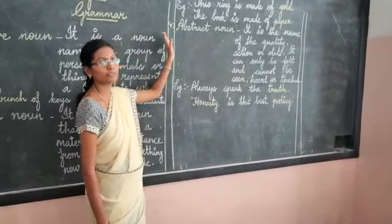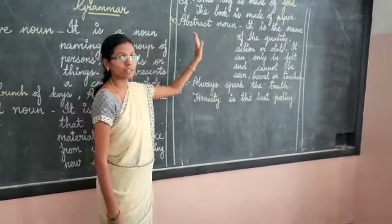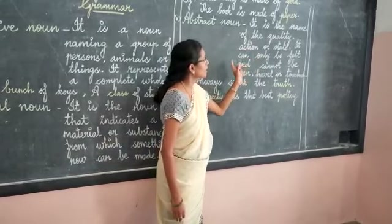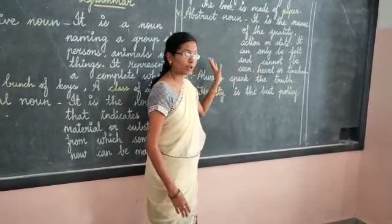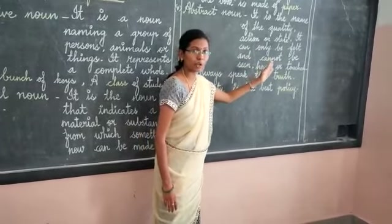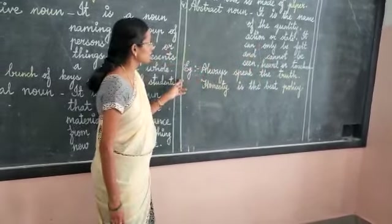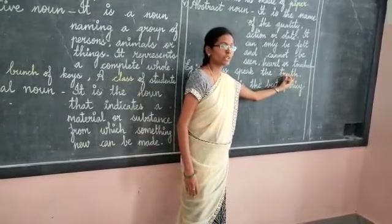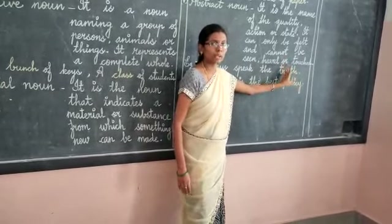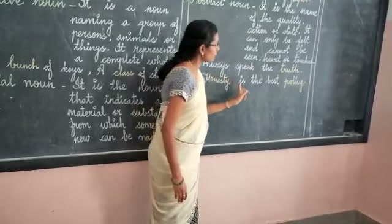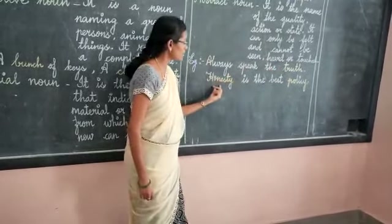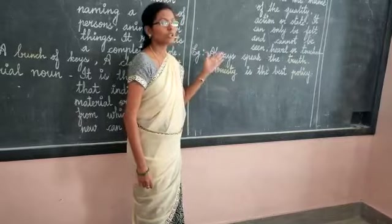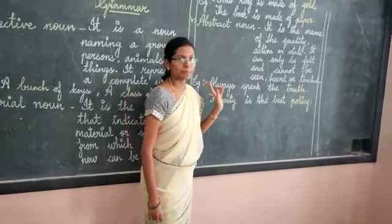Now let's see the fifth kind of noun — abstract noun. Listen carefully. It is the name of a quality, action or state. It can only be felt and cannot be seen, cannot be heard, and cannot be touched — you can only feel it. For example: 'Always speak the truth.' Here 'truth' is the colored word — it is the abstract noun. You cannot see it, you cannot touch it, you can only feel it. Another example: 'Honesty is the best policy.' Here 'honesty' and 'policy' are both abstract nouns.